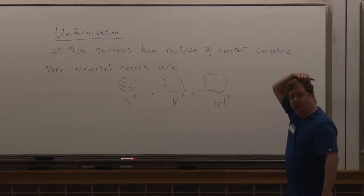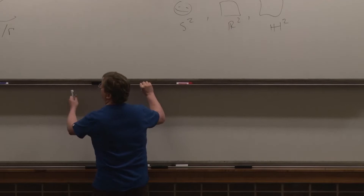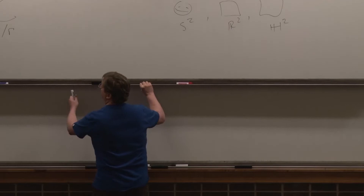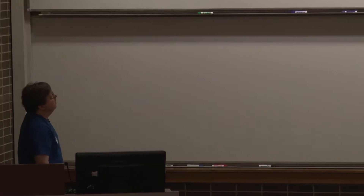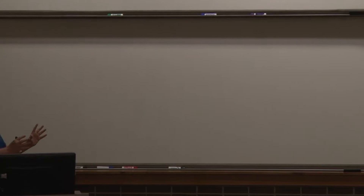Something like this does sort of work in dimension three, and I will mention some things about that as we go on. But the first observation I want to make is that you don't really need to do all of this hard analysis involved in getting a metric of honestly constant negative curvature to tell that there are these three different families that are fundamentally different from each other but similar to the other members of their family.